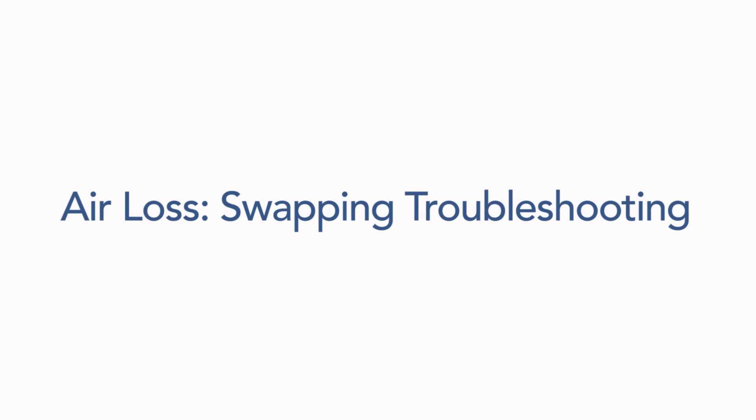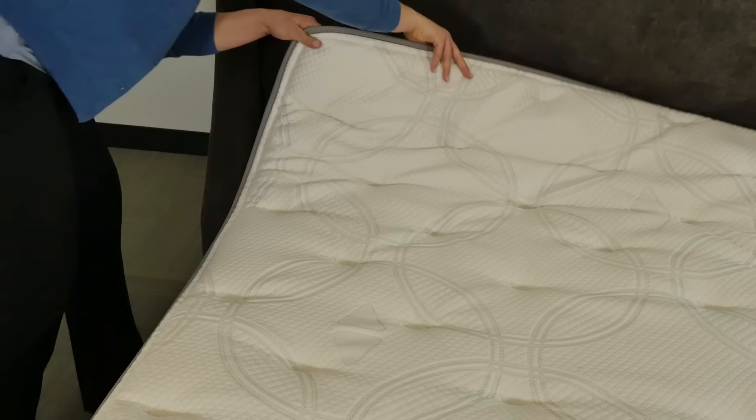This video will walk through troubleshooting to identify common causes of air loss. Slight fluctuations in the firmness of the bed can be caused by changes in air pressure or temperature.